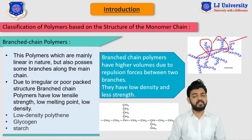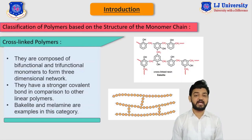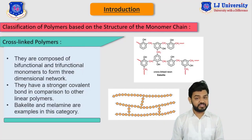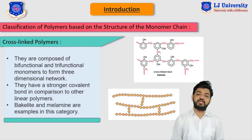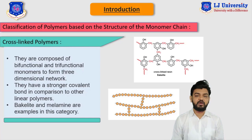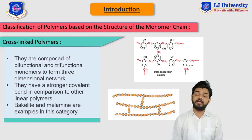Now let's continue this classification to the cross-linked polymers. As the name suggests, these polymers are cross-linked with their backbone. They are composed of bifunctional and trifunctional monomers — only these bifunctional and trifunctional monomers can form the cross-linked network of this polymer. They are basically composed of bifunctional and trifunctional monomers to form a three-dimensional network of complex structure. They have relatively strong covalent bonds between their monomeric units. Bakelite and melamine are classic examples of cross-linked polymers.